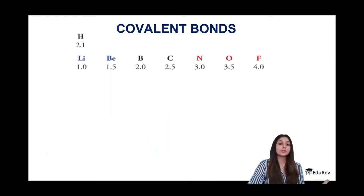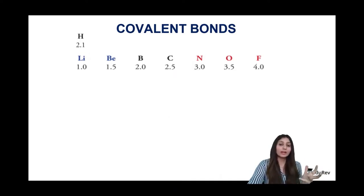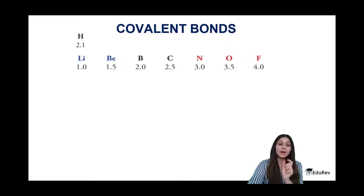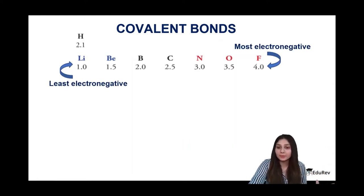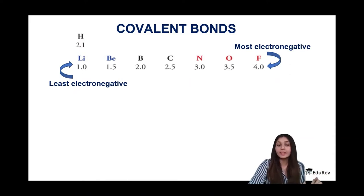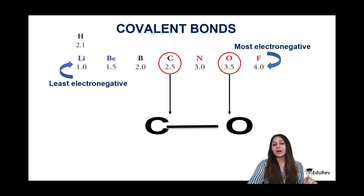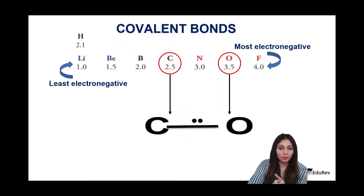Electronegativity is the tendency of an atom to attract the shared pair of electrons toward itself. The shared pair should ideally be exactly in between both combining atoms, but because of higher electronegativity, some atoms attract it more toward themselves. Chlorine has the highest electronegativity value of 4.0 on the Pauling scale, while lithium has the least. These values are important to remember.